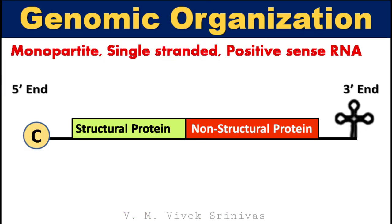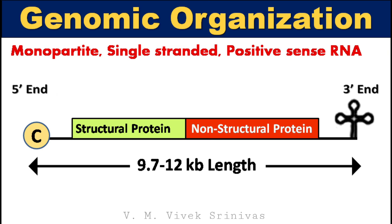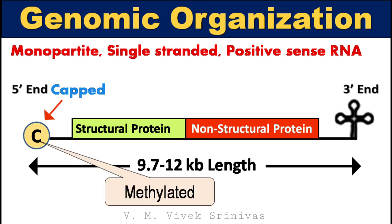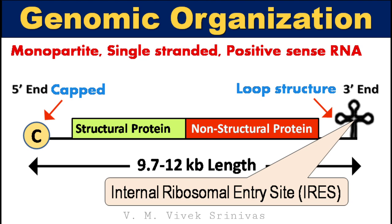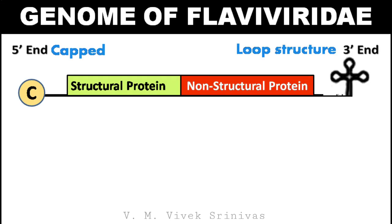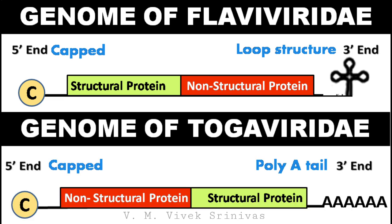Regarding genomic organization, the genome is monopartite, single-stranded, and positive-sense RNA. The genome length is 10 to 12 kilobase pairs. The 5' end is methylated, that is capped, and the 3' end possesses an IRES — internal ribosomal entry site — which forms a loop structure. The differentiating feature from togaviridae viral genomes is that here the structural protein-coding genes are toward the 5' end and non-structural protein-coding genes are toward the 3' end, whereas in togaviridae it is vice versa.